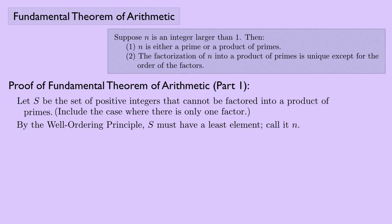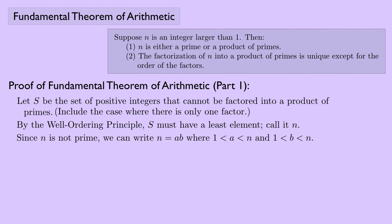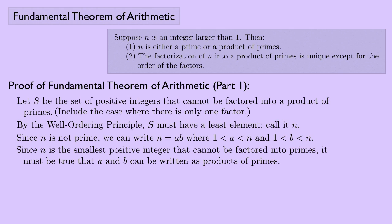Call that least element n. So s is the set of positive integers that cannot be factored into a product of primes, and n is its least element. Since n is not prime, we can write n as a product a times b, where both a and b are between 1 and n. Since n is the smallest positive integer that cannot be factored into primes, it must be true that a and b can be written as a product of primes. But n equals a times b, so n itself must be a product of primes. And this is a contradiction.